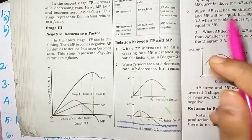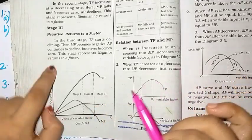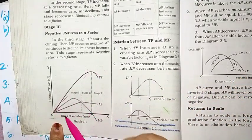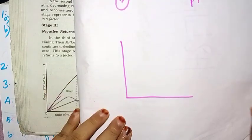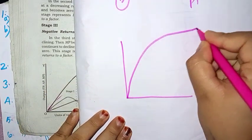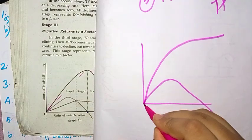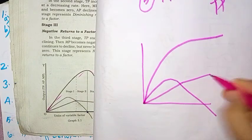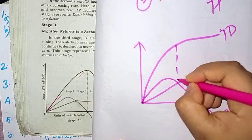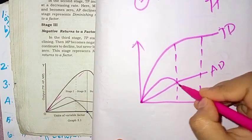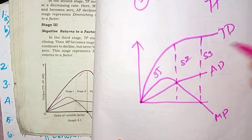Now we have a diagram. This shows TP — total product — and MP, AP. This graph displays TP, AP, and MB (marginal product). Let's classify the stages. We have to see what is going on in each stage.